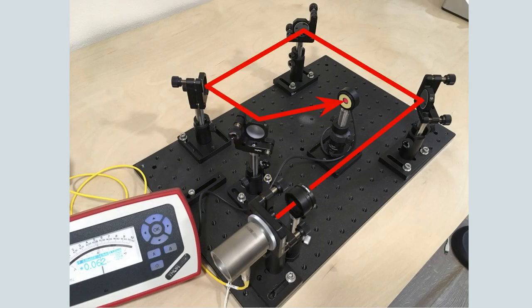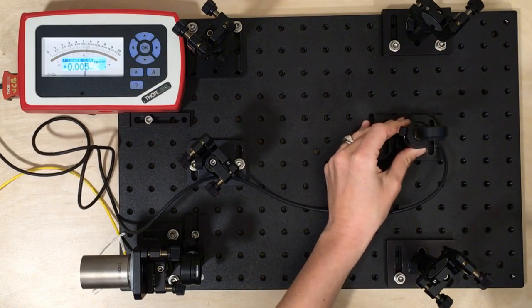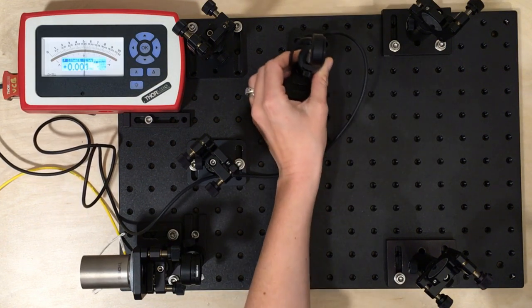Optical systems frequently employ multiple mirrors, so inefficiencies multiply. A system with four reflections loses almost half the light when the individual mirrors have 90% reflectivity.